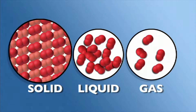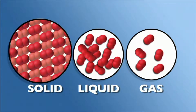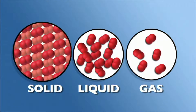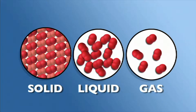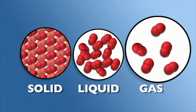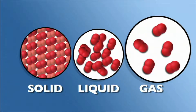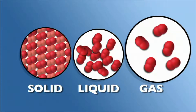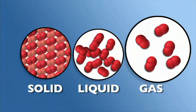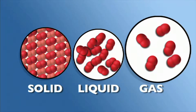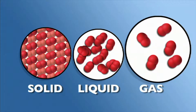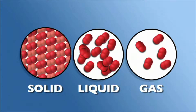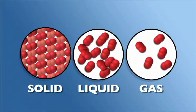This density is why objects, like a baseball, are hard and firm. The molecules in a gas, like air, are spaced farther apart. They are not densely packed like they are in a solid.